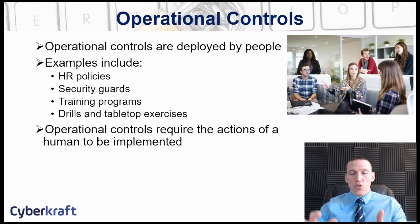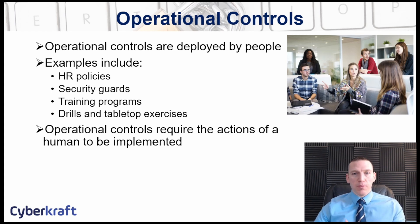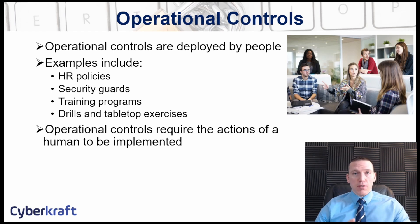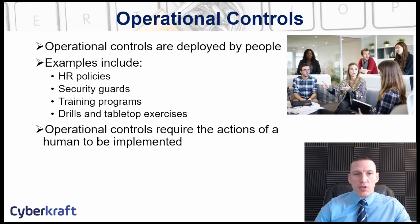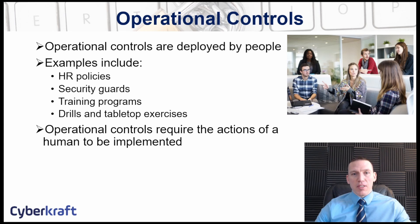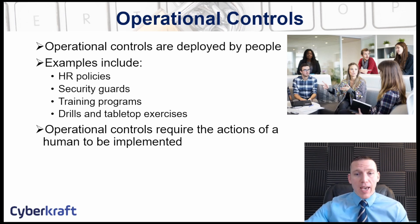An operational control is a control that is people-oriented. It's designed to direct personnel and employees on how to act or behave. An acceptable use policy is an example of an operational control. Training, tabletop exercises, full tests, dry runs — those are all operational controls. HR policies and HR-oriented approaches are also operational controls. You need a human element to make it an operational control.